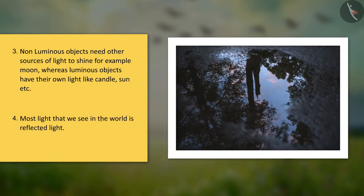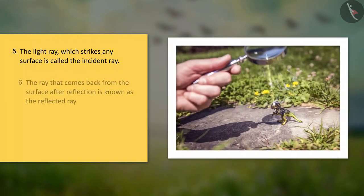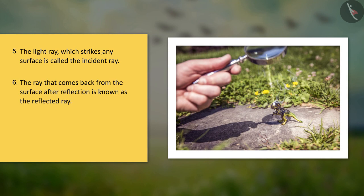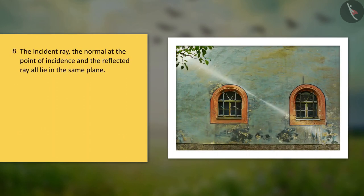Most light that we see in the world is reflected light. The light ray which strikes any surface is called the incident ray. The ray that comes back from the surface after reflection is known as the reflected ray. The angle of incidence is always equal to the angle of reflection — this is one of the laws of reflection. The incident ray, the normal at the point of incidence, and the reflected ray all lie in the same plane.